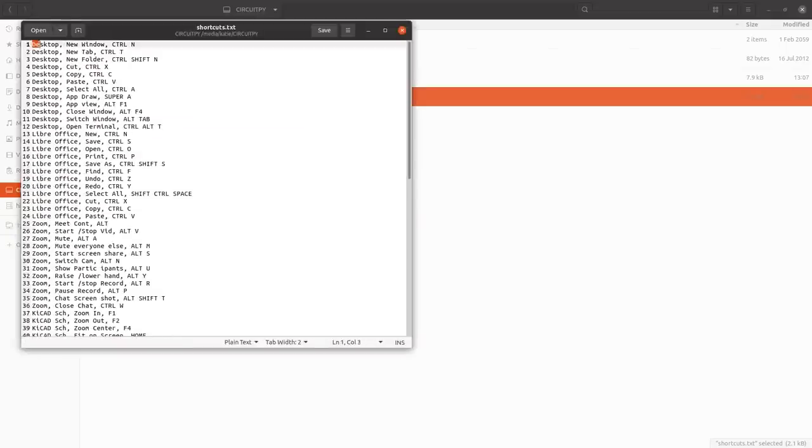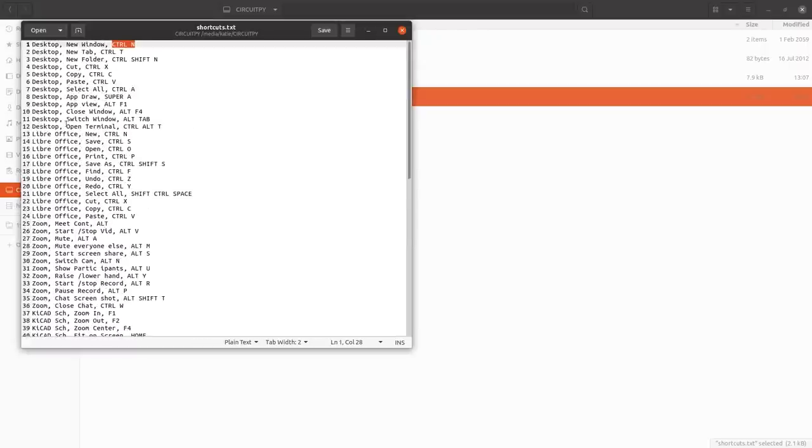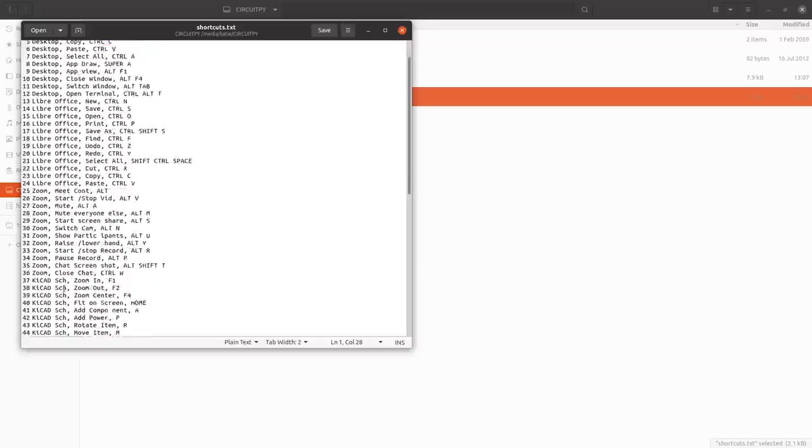So to add shortcuts you can open this. You set what application the shortcuts are first. There's 12 available for each one. The description you want to show on the screen. And then what key presses are needed to do that shortcut. So I've set up some for normal desktop operation, LibreOffice, Zoom, KiCad, shortcut.